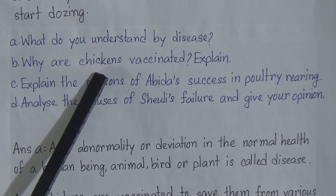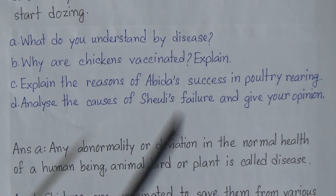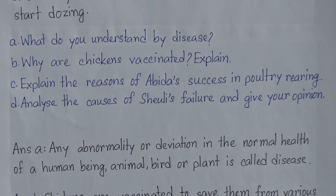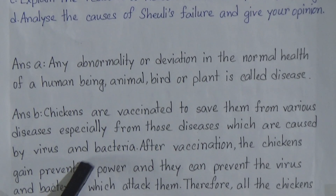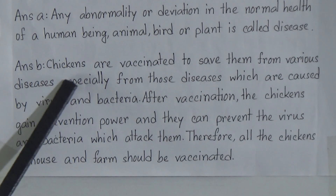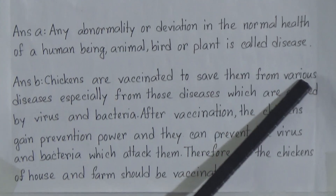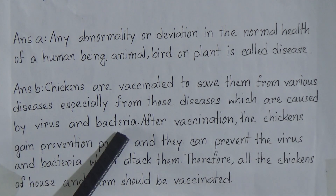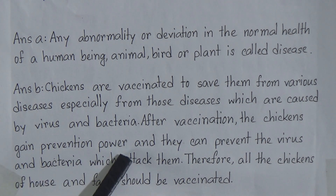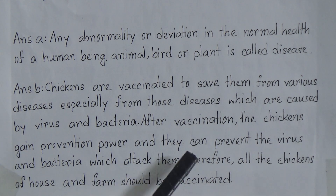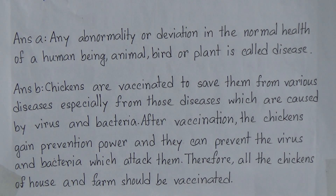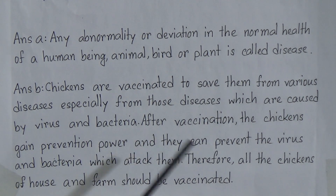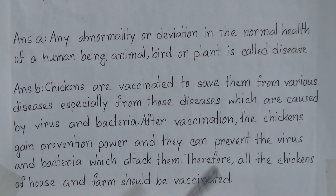Number B: why are chickens vaccinated? Explain. So why do we vaccinate chickens? To prevent them from diseases, especially from viral and bacterial diseases. The answer is: chickens are vaccinated to save them from various diseases, especially those caused by viruses and bacteria. After vaccination, the chickens gain immunity and can resist viruses and bacteria that attack them. Therefore, all chickens in a house or farm should be vaccinated.